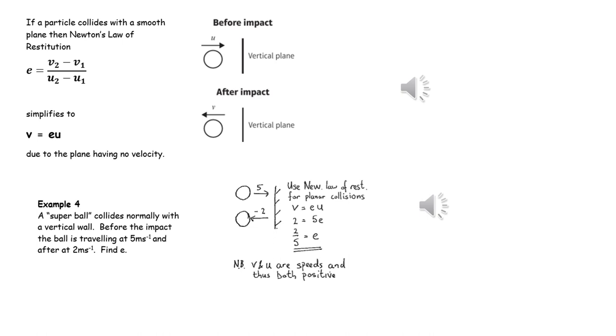In example four we can apply Newton's law of restitution or Newton's experimental law and just quote V equals EU, remembering that both V and U are separation speed and approach speed, so they both have to be positive quantities.